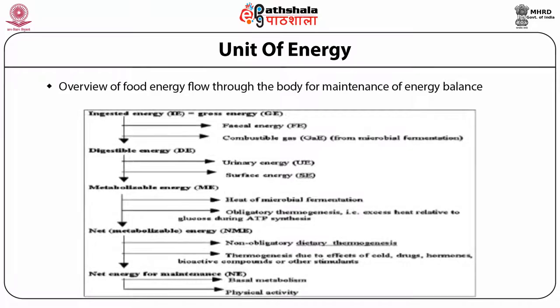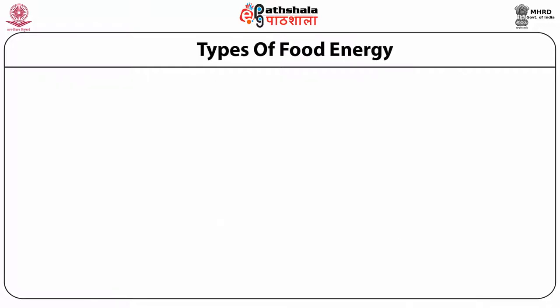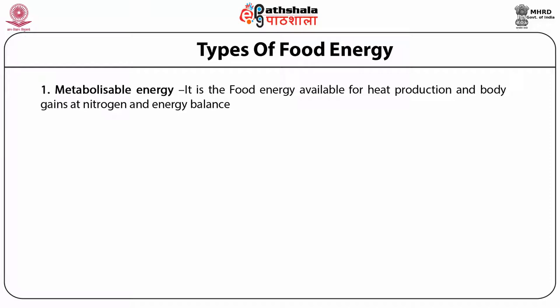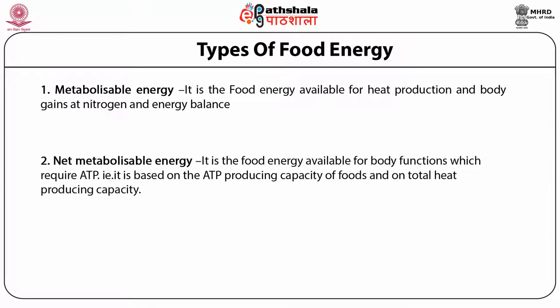The slide gives an overview of food energy flow through the body for maintenance of energy balance. There are two types of food energy: metabolizable energy and net metabolizable energy. Metabolizable energy is the food energy available for heat production and body gains at nitrogen and energy balance.